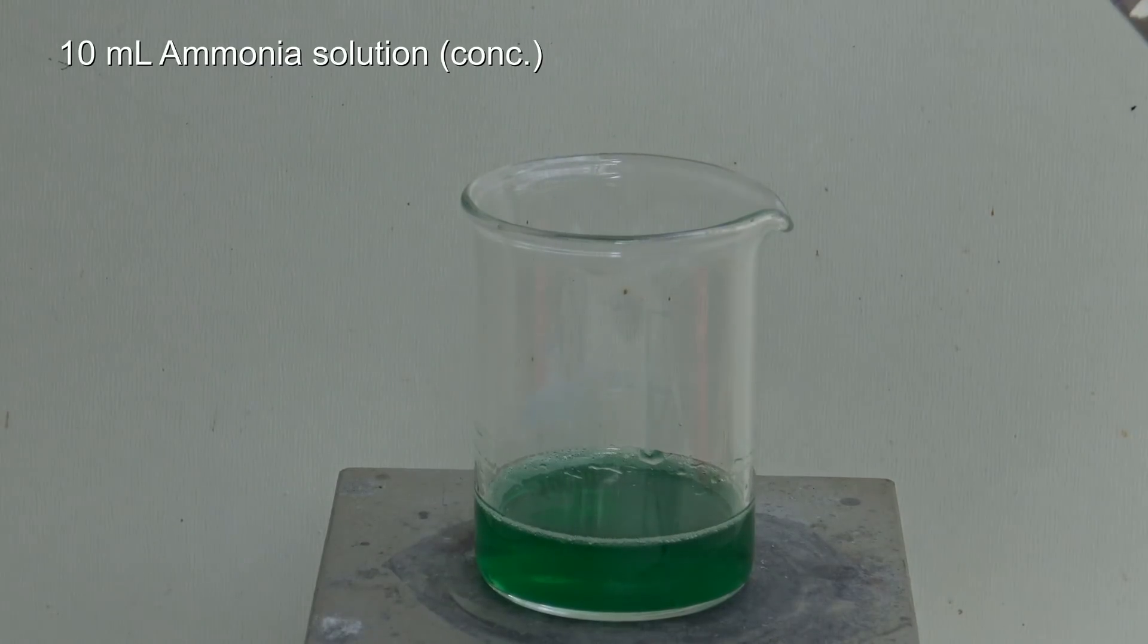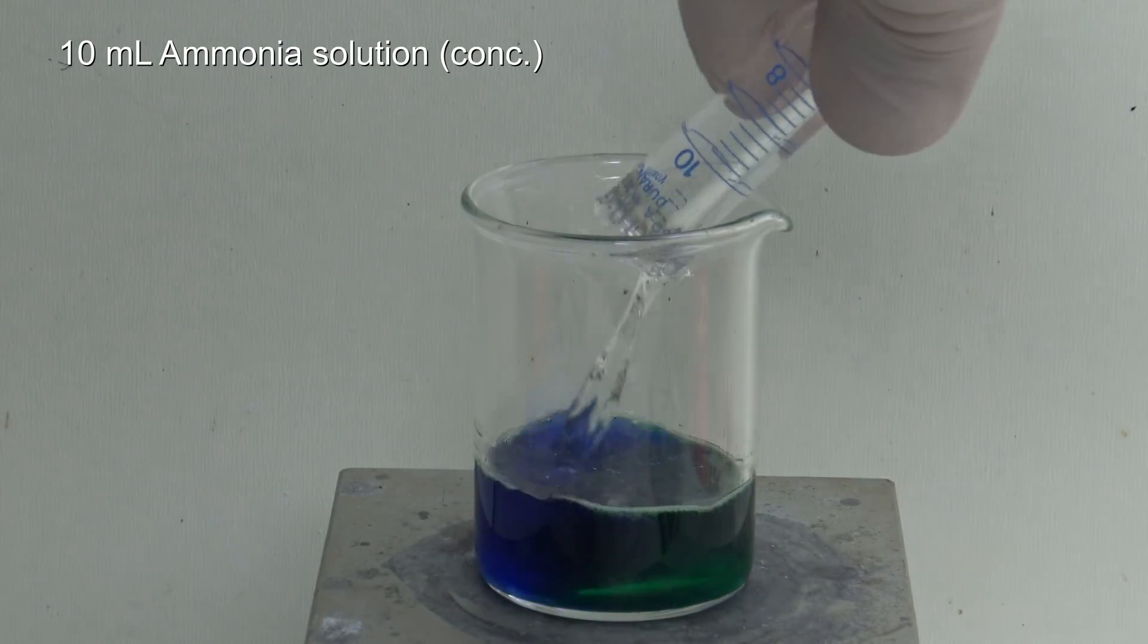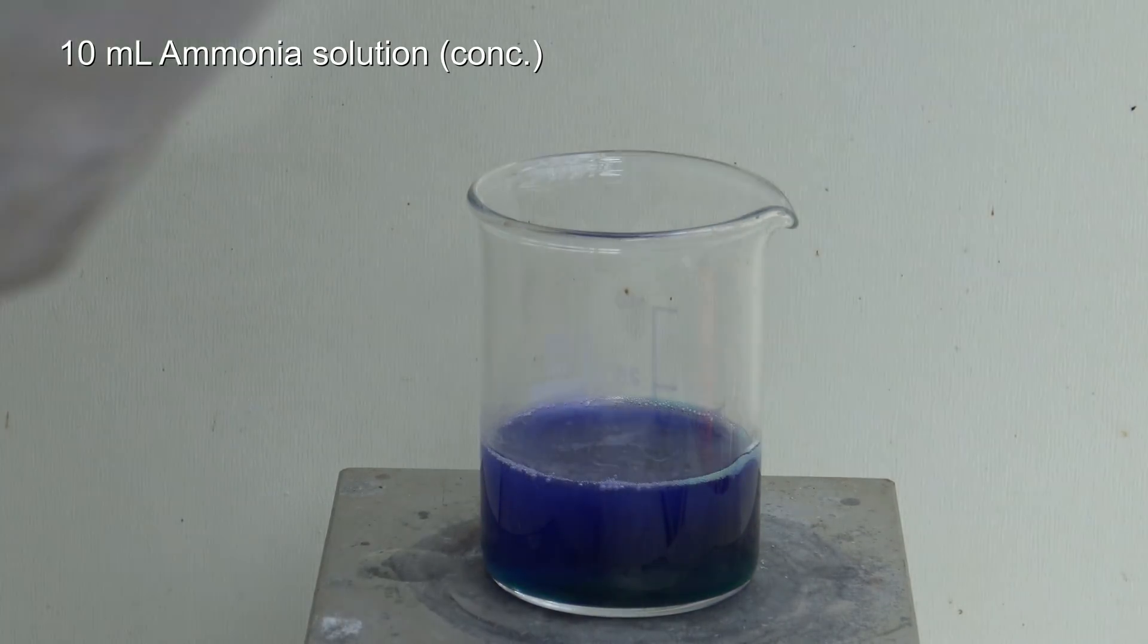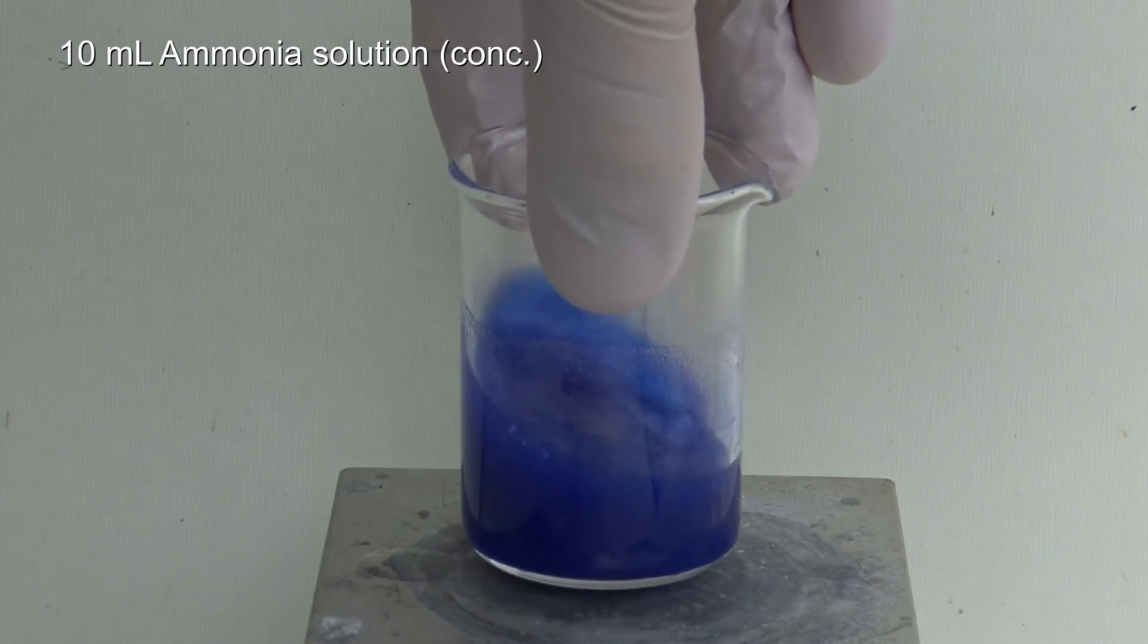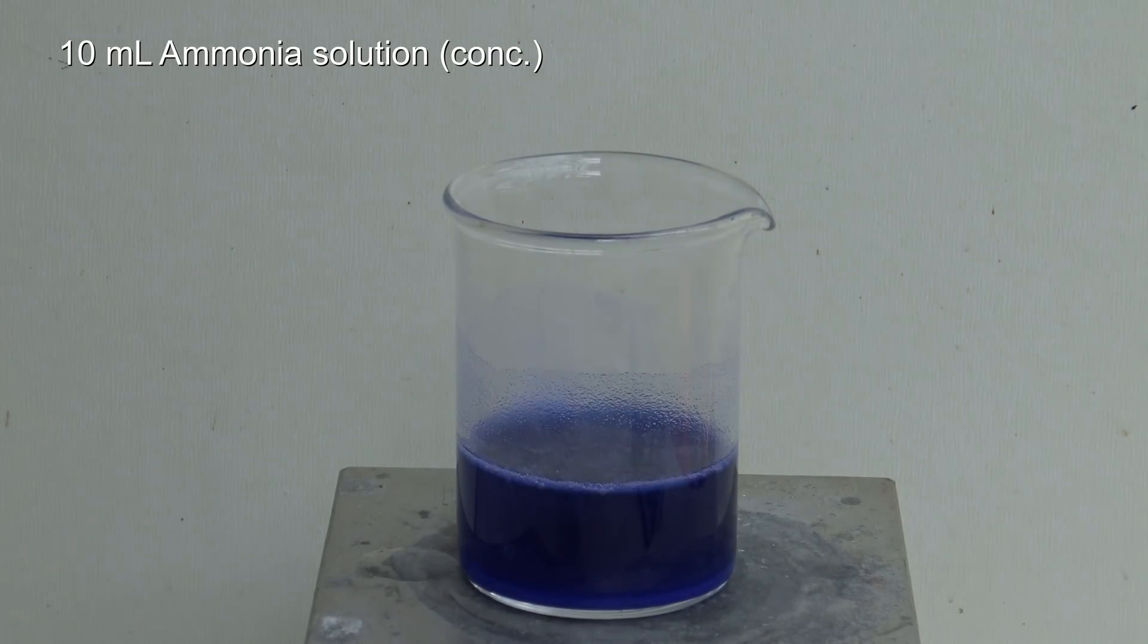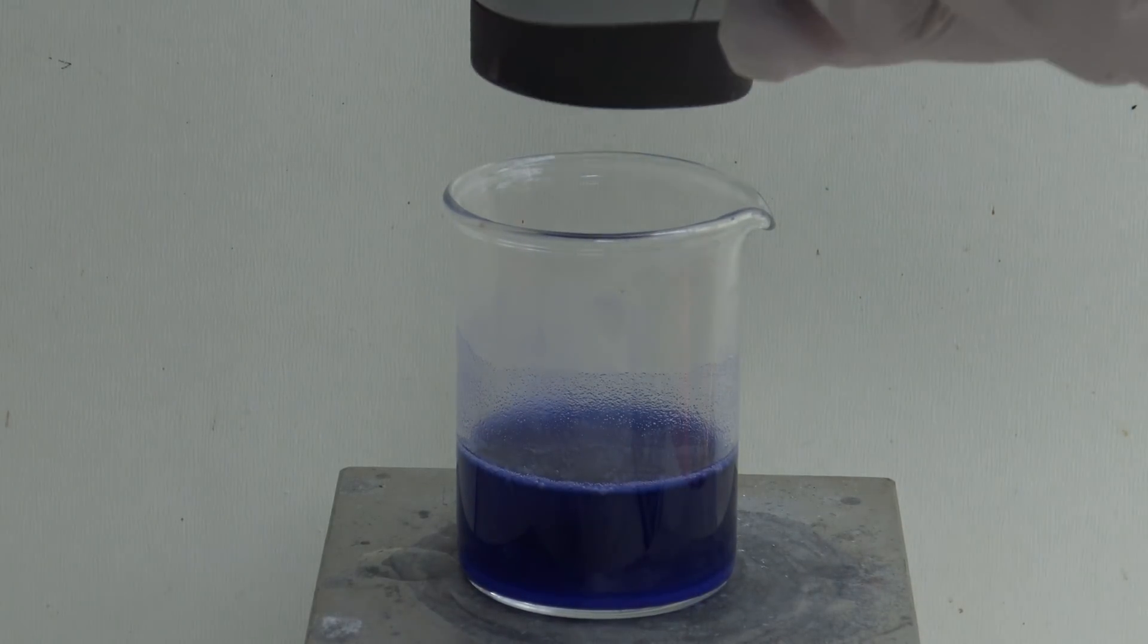Then, 10 milliliters of concentrated ammonia solution were added. The solution turned blue and a precipitate formed immediately. In addition to that, the solution heated up a bit.